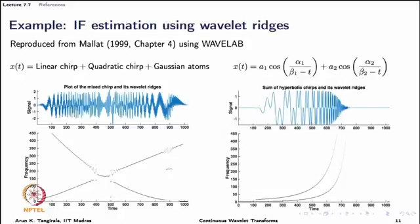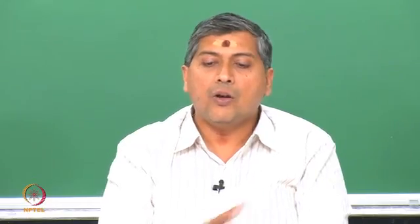You can see small gray shadows here which indicate the presence of Gaussian atoms and where they are located in the signal. You can generate this signal using WaveLab. On the right, we have a sum of hyperbolic chirps; the expression is given at the top. The values of beta_1 and beta_2 are in Mallat's book, but what is important is to see whether the wavelet ridges correctly produce the instantaneous frequency estimates. The top shows the signal and the bottom shows the ridges — the wavelet ridges have come up with very good estimates.